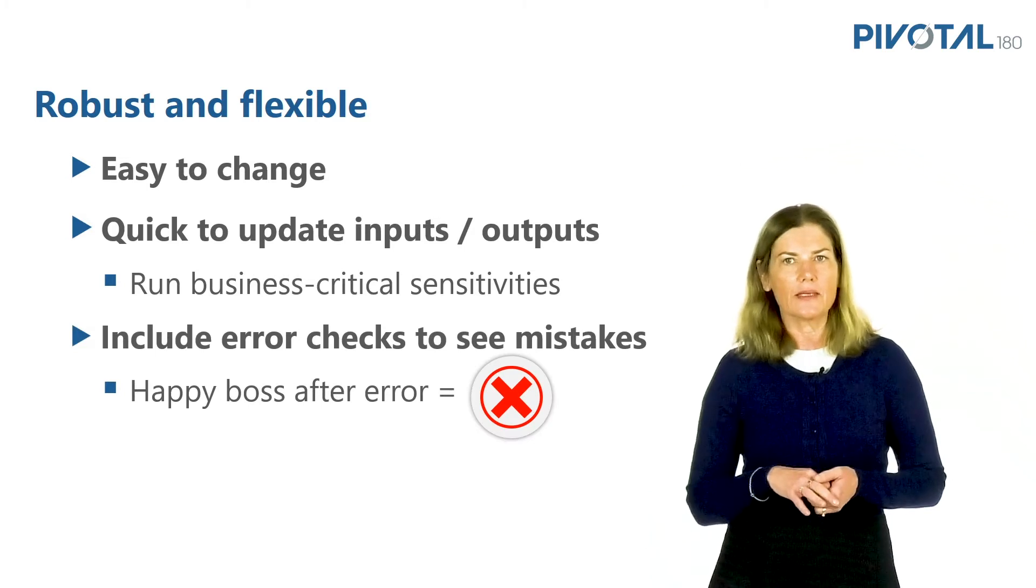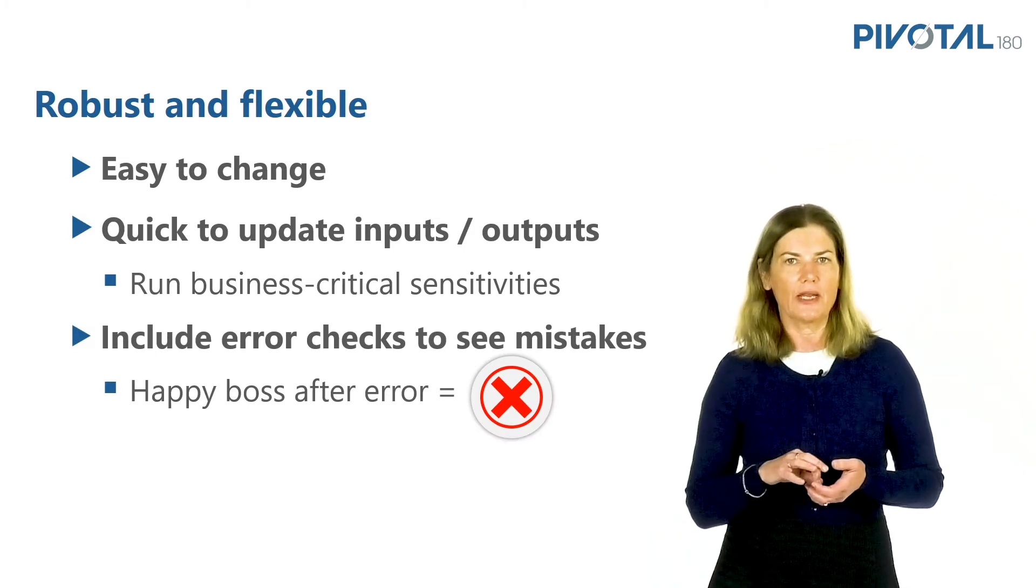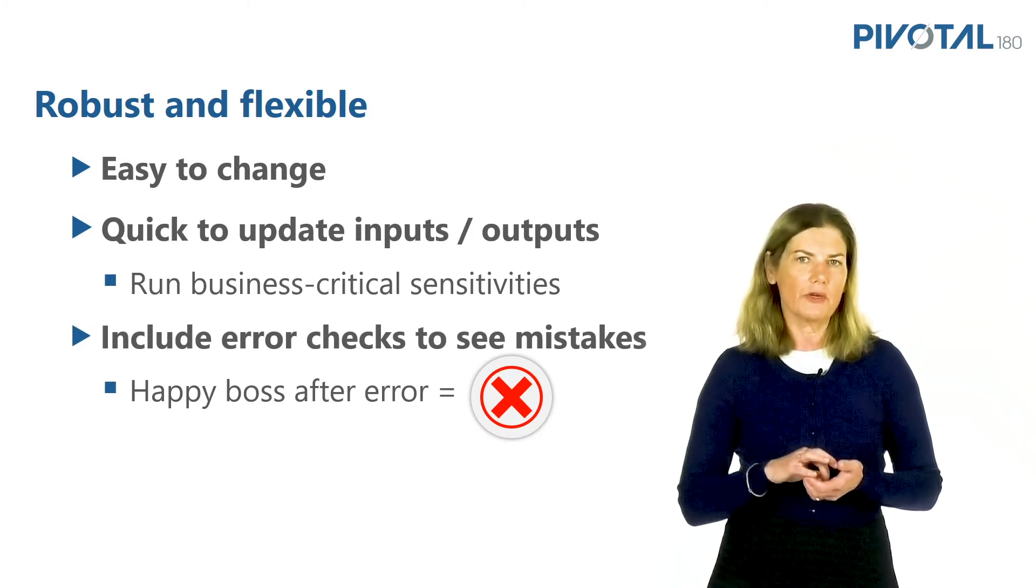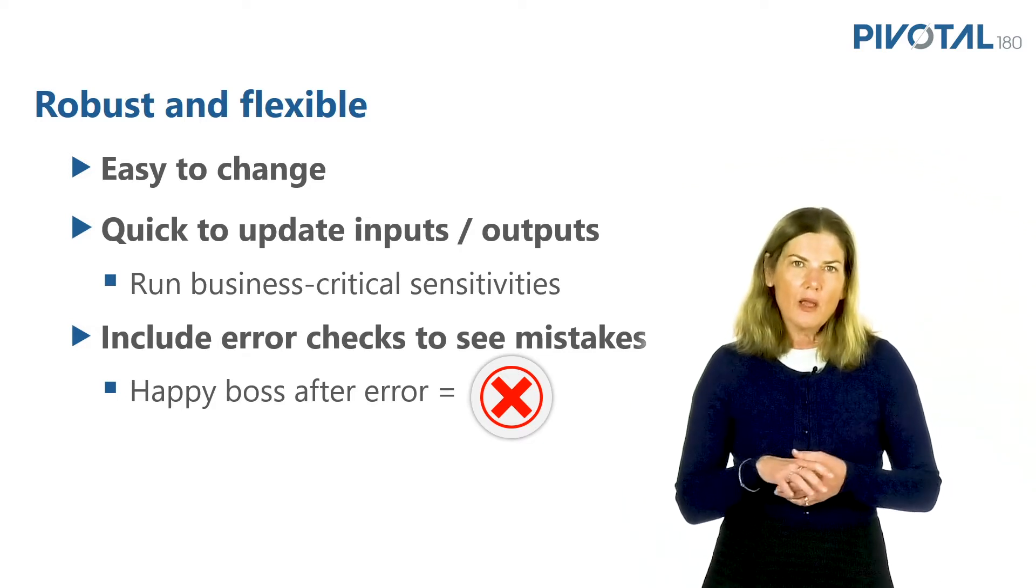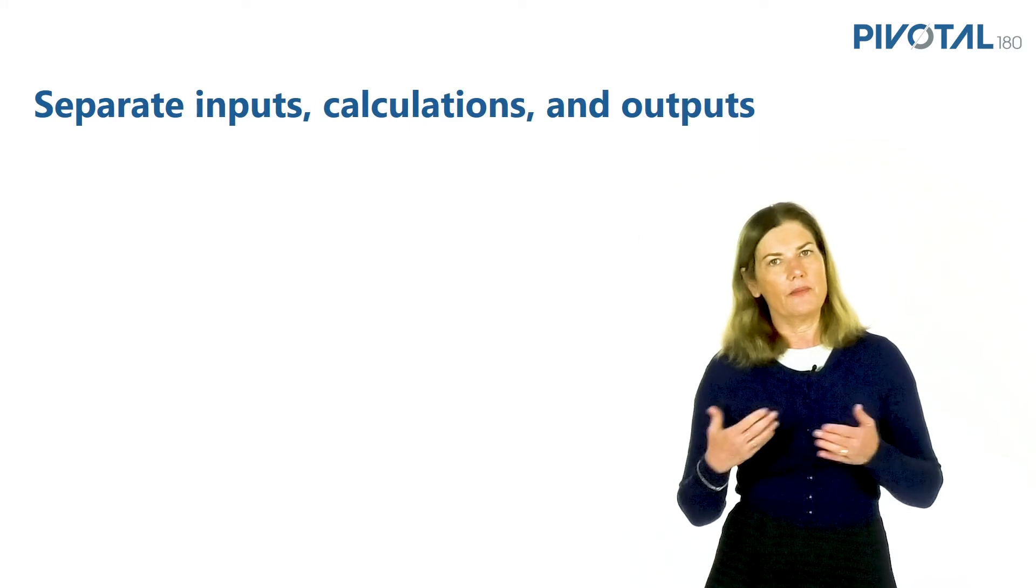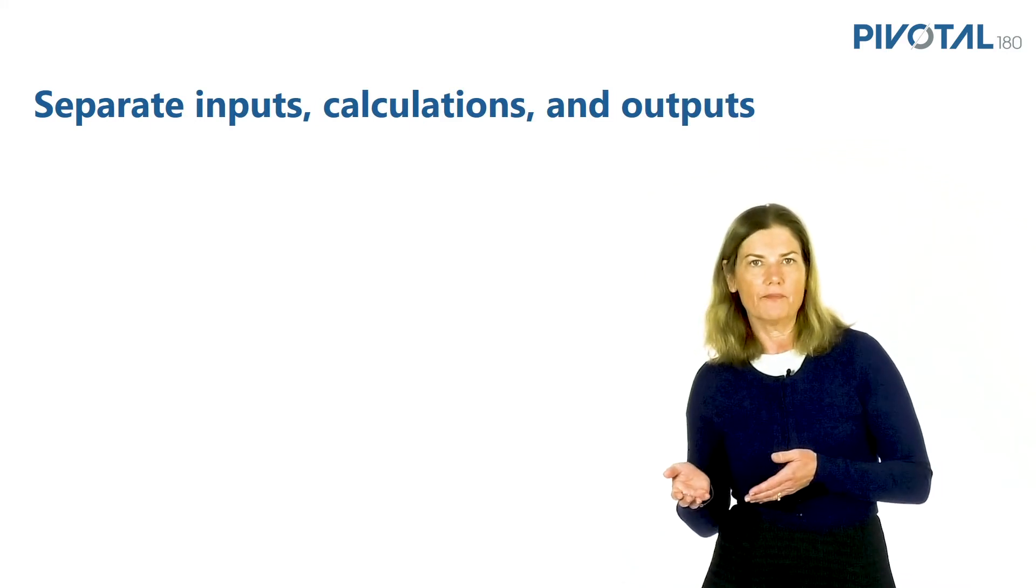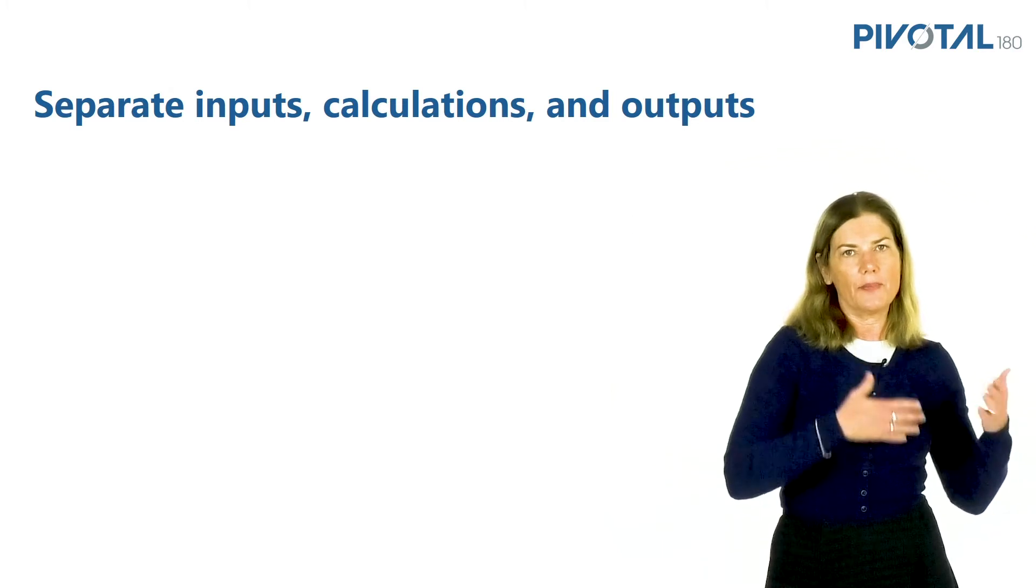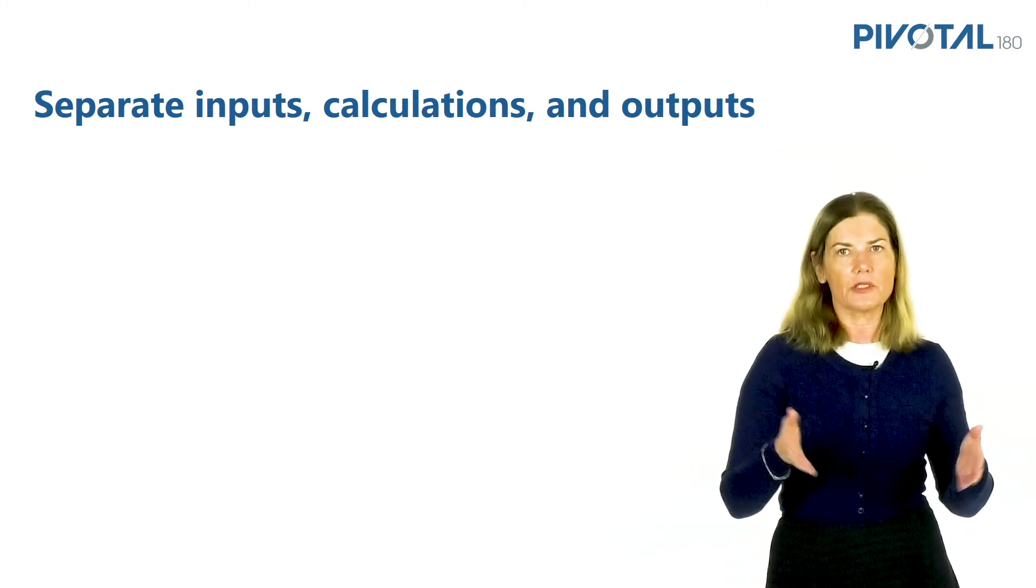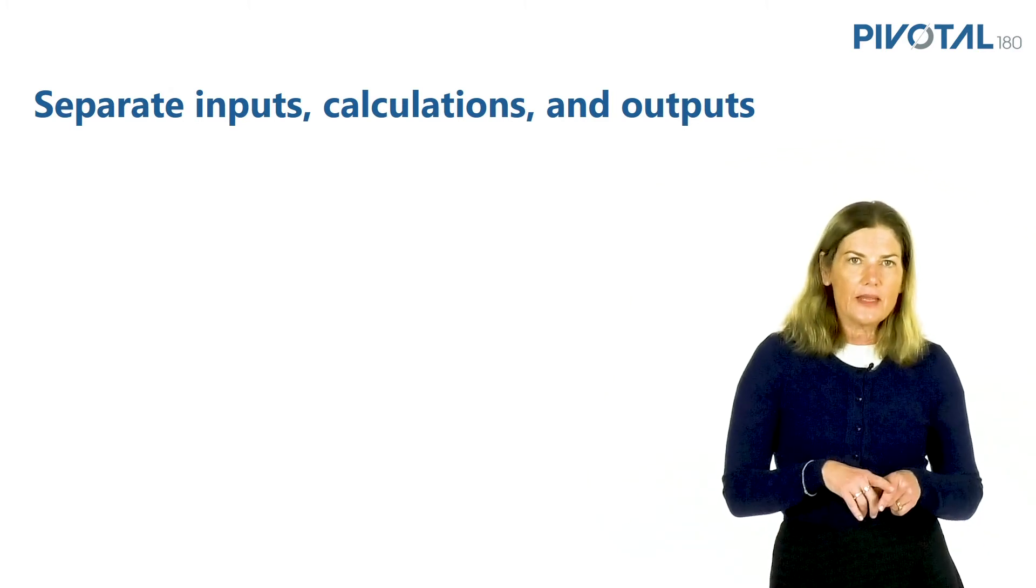There are also rules that need to be applied as a best practice in a financial model. Let's look at three of Pivotal's ten rules of financial modeling. One of the rules is to separate inputs, calculations, and outputs. The inputs are manually entered into a model and they're separated from the calculations and the outputs by using different tabs.